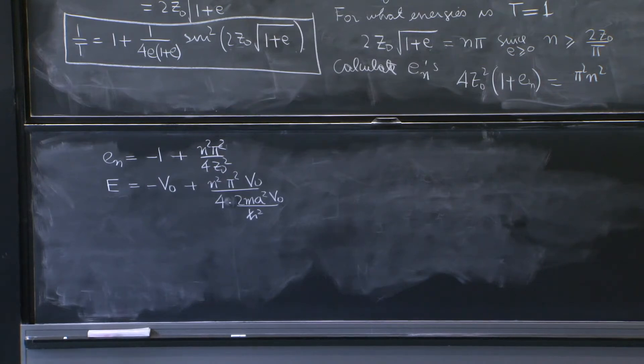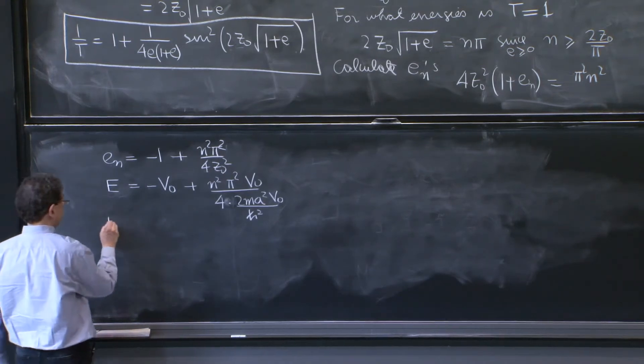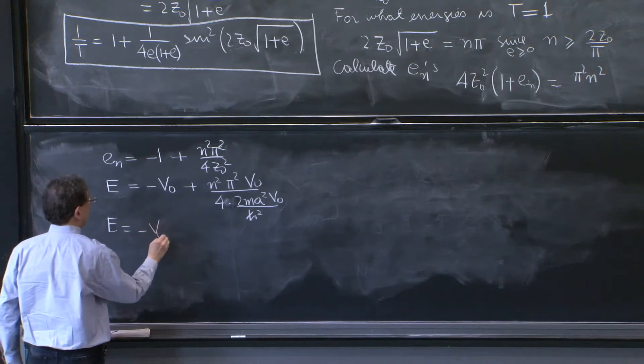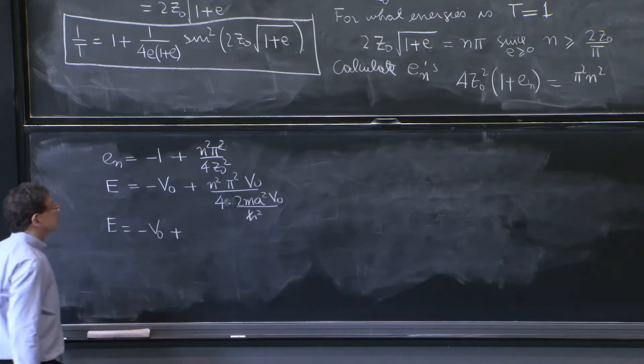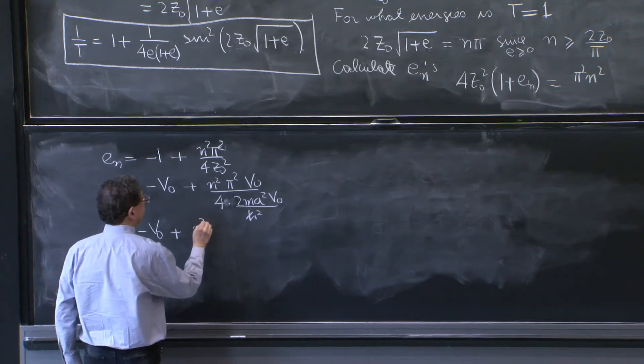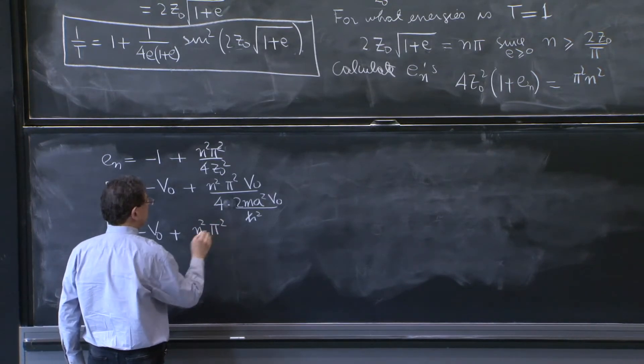So e is minus v0 plus n squared pi squared.